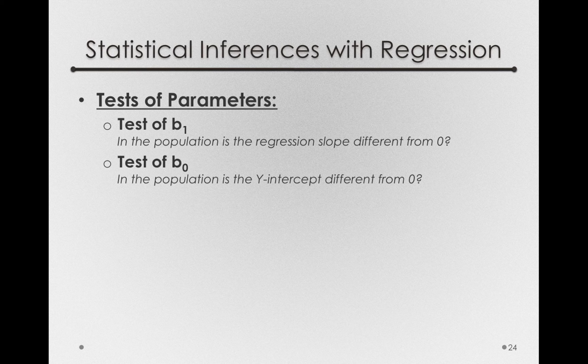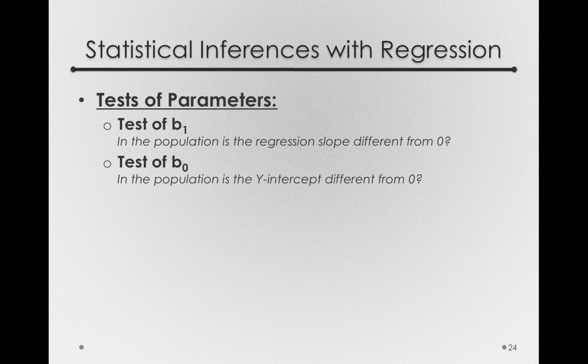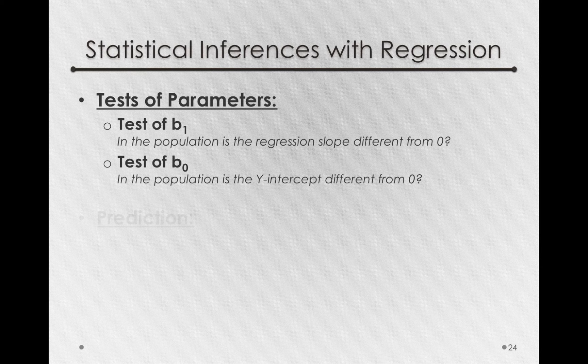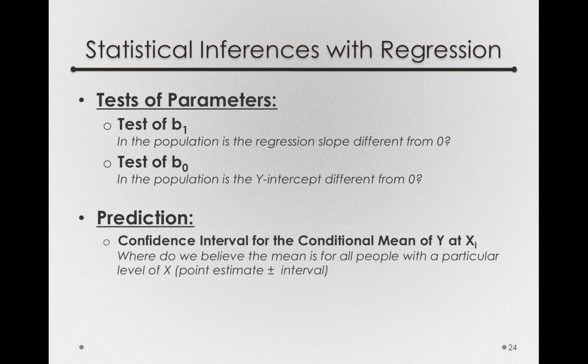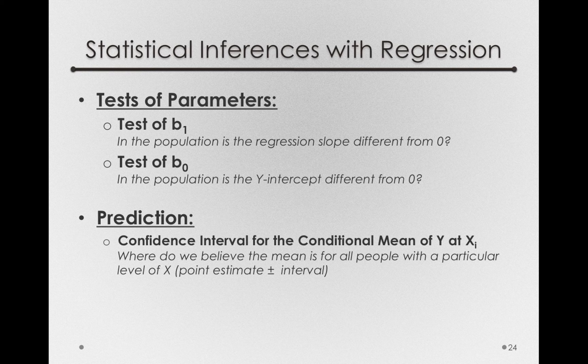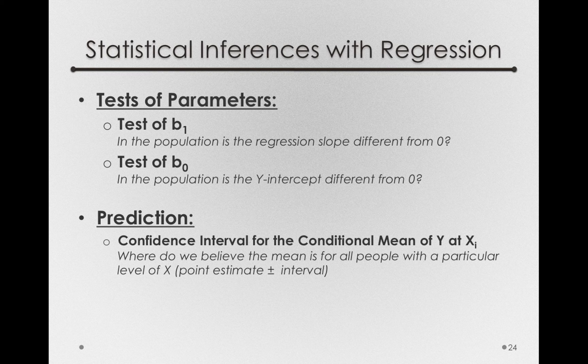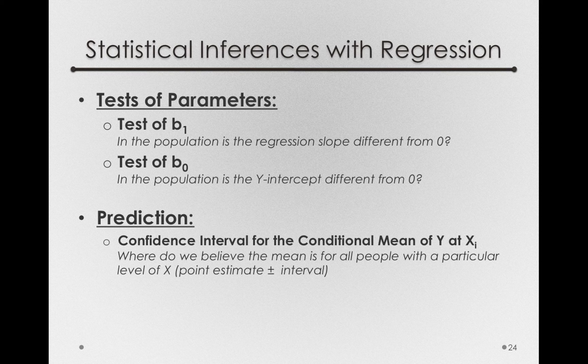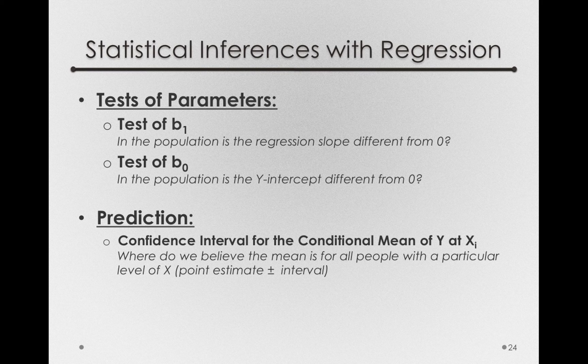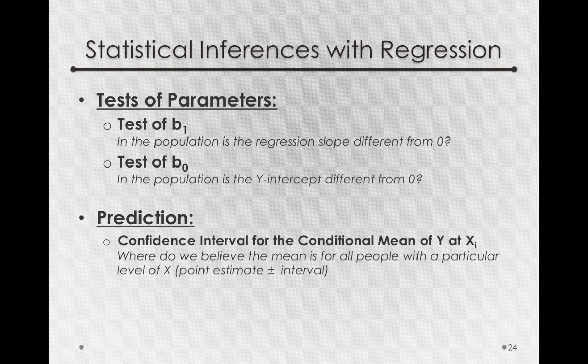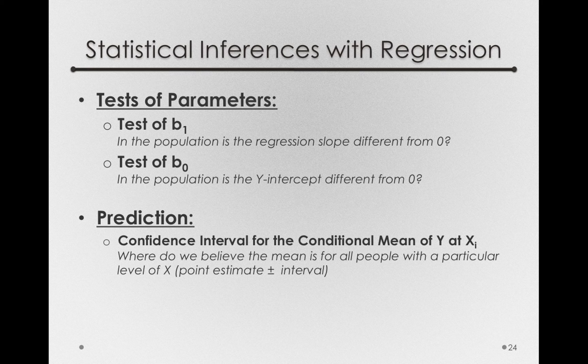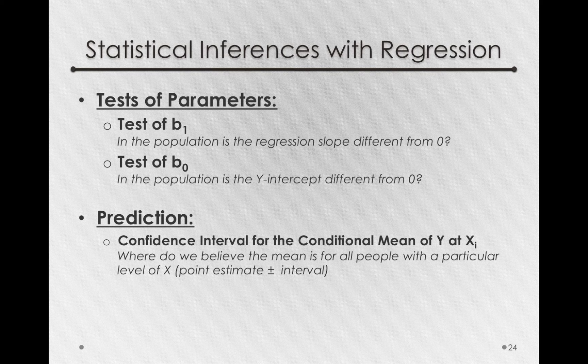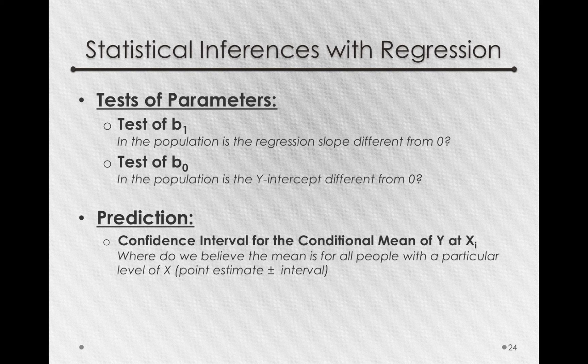Now in addition to the test of parameters, by having an estimate of error, we can also do several types of prediction. Specifically, a confidence interval for the conditional mean of y at xi. This is a question of, where do we believe the mean is for all people with a particular level of x? So this will be a point estimate, plus or minus some interval. So this is really a confidence interval around the mean of all people of y at a given x.